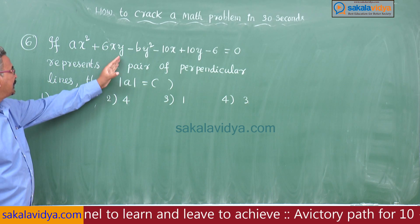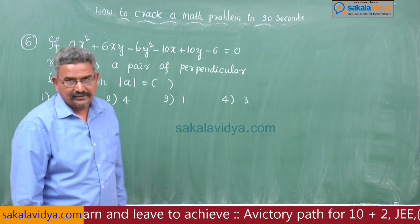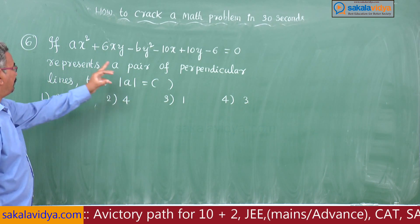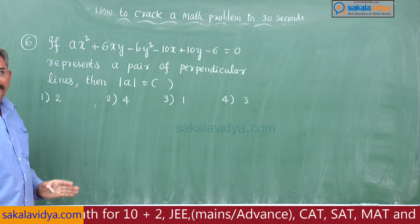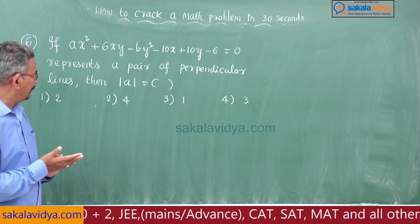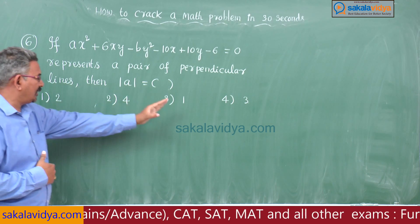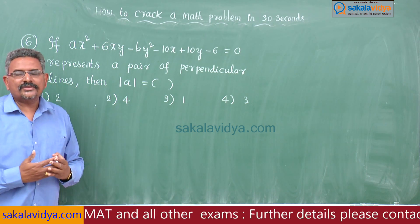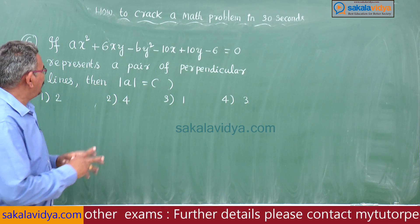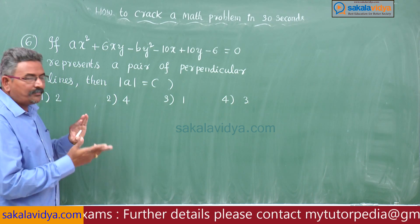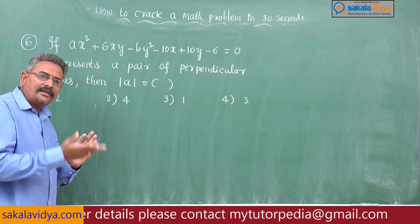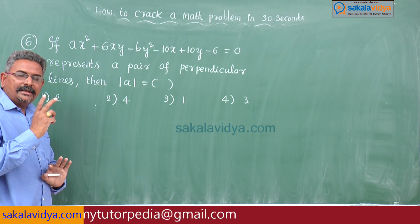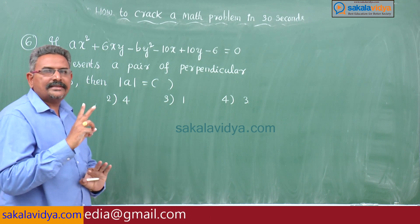Sixth problem: if Ax² + 6xy - By² - 10x + 10y - 6 = 0 represents a pair of perpendicular lines, then find the modulus of A. Options: first 2, second 4, third 1, fourth 3. Since they represent perpendicular lines, two conditions must be satisfied.